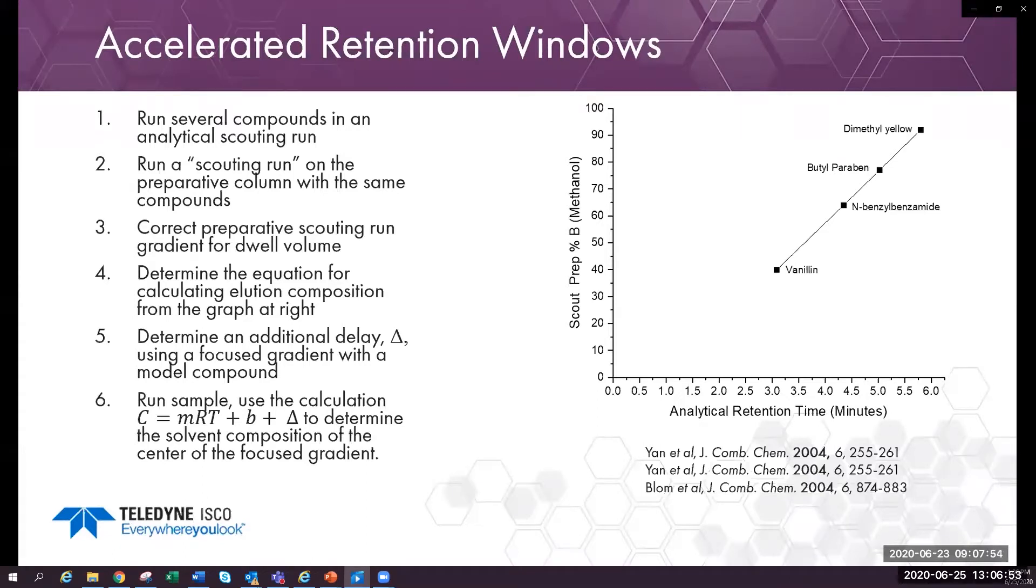Correct the preparative run for the dwell volume of the preparative system. The dwell volume is the volume between the gradient former and the top of the column and you need to measure it for this technique. Create a graph that relates the solvent composition to the time the compound elutes from the analytical column.